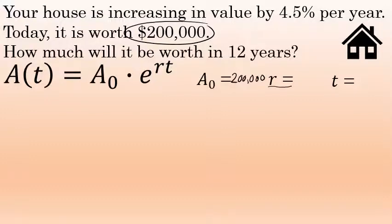r, the rate of growth, is 4.5%. Now this is increasing in value, the house is increasing in value, so I'm going to express this rate as a positive number, and I'm going to write it as a decimal. I'm not going to write 4.5 here. I'm going to express the percent as a decimal, moving the decimal place two places to the left. 4.5% as a decimal is 0.045.